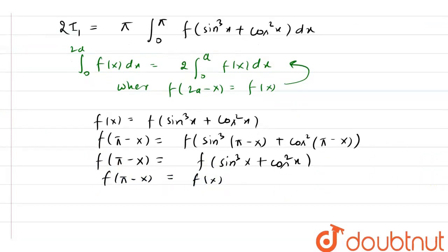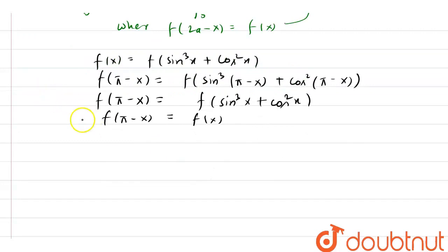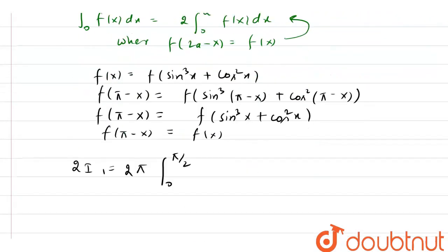So I can apply this rule: 2i1 equals pi and I can take 0 to pi by 2 limit multiplied by 2, and we have f of sin cube x plus cos square x dx. Now, 2 will get cancelled out, and we have i1.